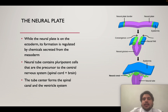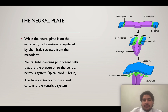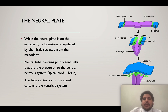The neural tube contains stem cells such as pluripotent cells, which are the precursor cells to many different types of cells in the nervous system. They form the spinal cord and the brain. Specifically, the tube's center leads to the formation of the spinal canal and the ventricular system in the central nervous system.